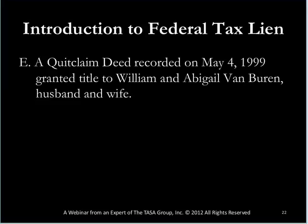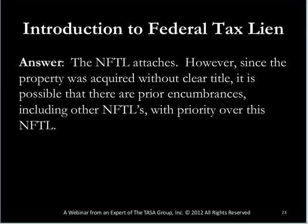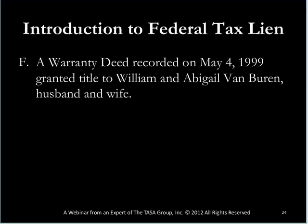Example E: Same basic premise — William and Abigail Van Buren have that federal tax lien. This time we found a quitclaim deed granting title to William and Abigail. The federal tax lien will attach to this property. However, since they acquired the property without a valid title search, there could be prior encumbrances — federal tax liens, state tax liens, or anything else from the previous owner that go with that property. In this particular case, if there was a prior federal tax lien, the lien recorded against William and Abby would fall behind it in order of priority.